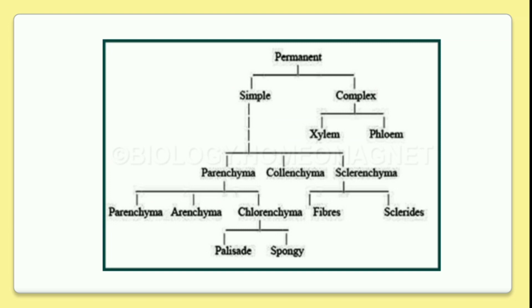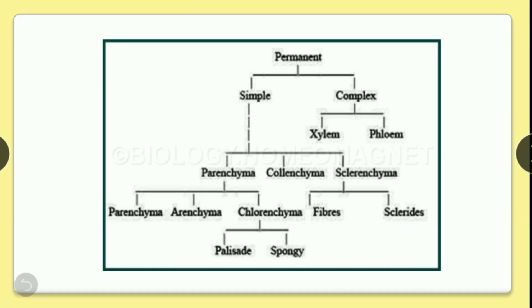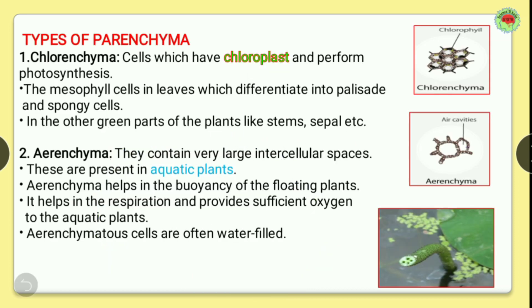The permanent tissue is classified into two types: simple and complex. The simple tissue is further divided into three types: parenchyma, collenchyma, and sclerenchyma. Parenchyma is further divided into three more types: parenchyma, aerenchyma, and chlorenchyma. Chlorenchyma is classified into two more types: palisade and spongy. Today we will discuss these types in this video.